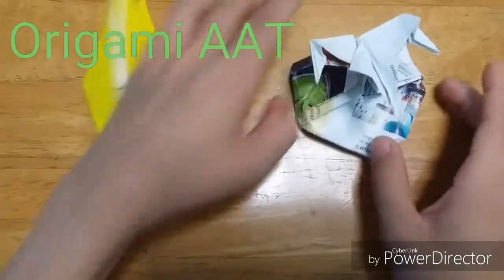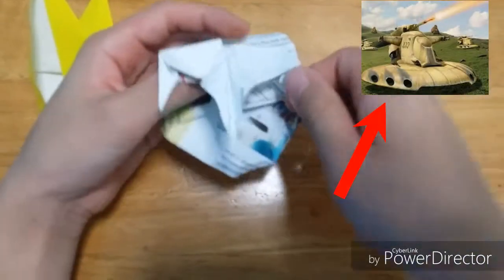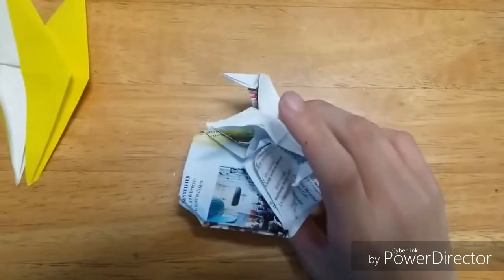I'll be showing you how to fold this AAT armored assault tank from Episode 1 and the Clone Wars that the Trade Federation and the Separatists use.